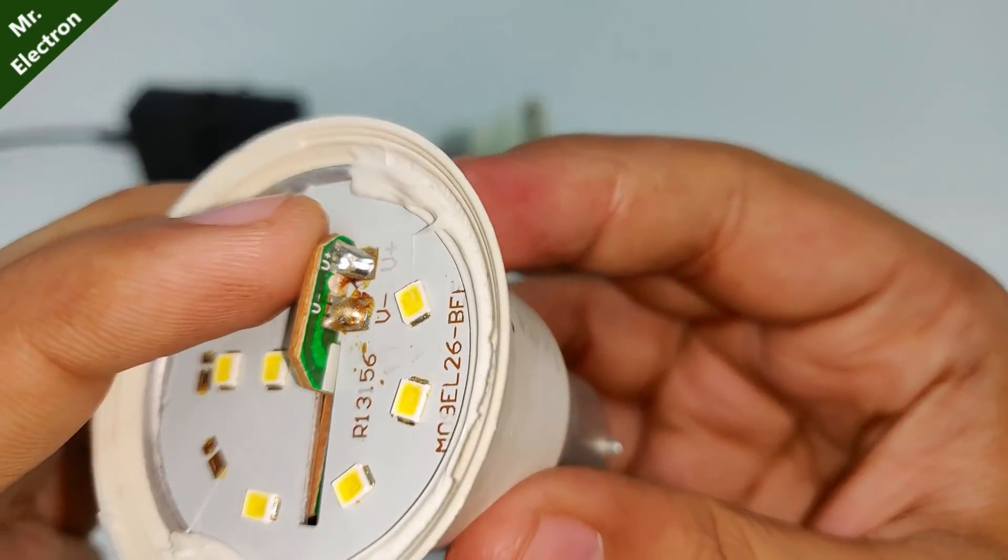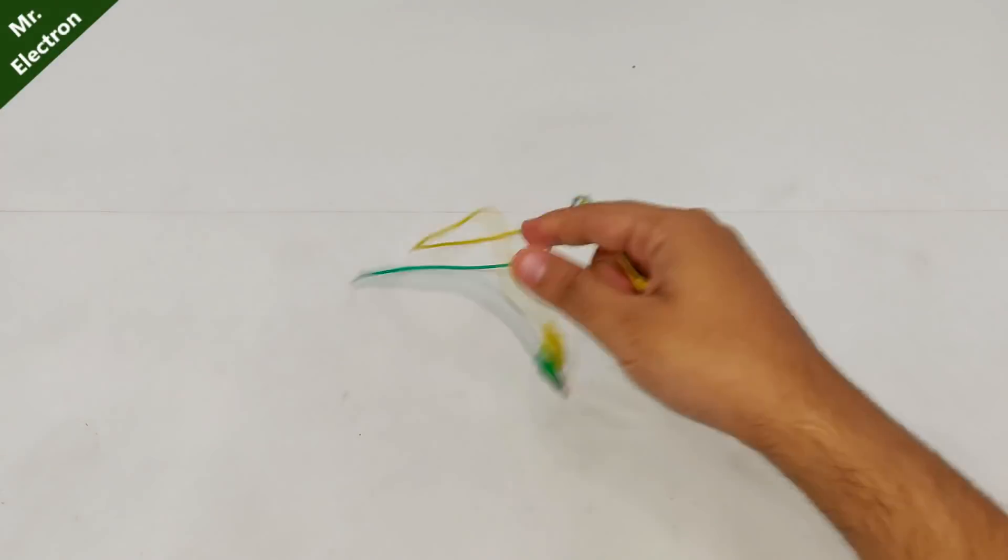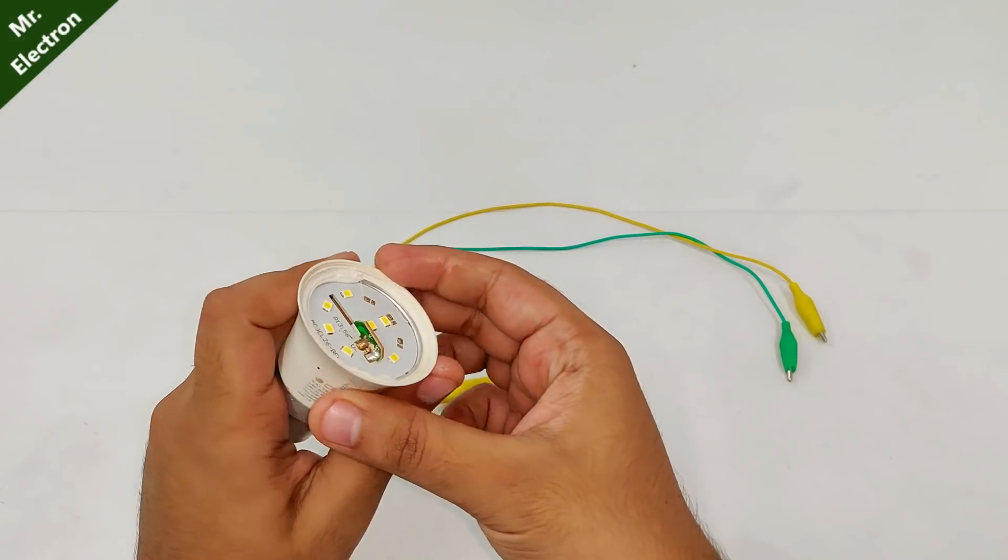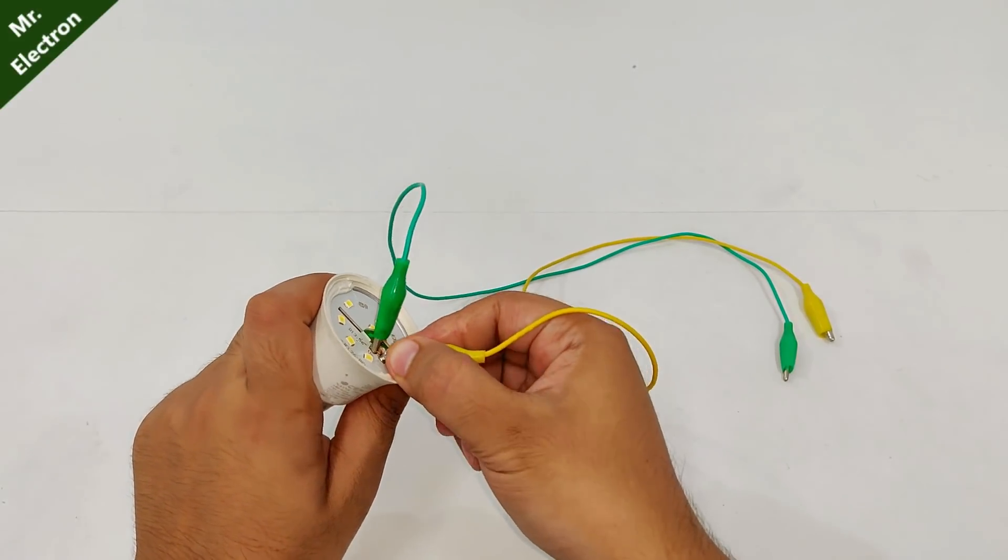Because there are no jumper wires in this one, I will have to figure out another method of doing the test. Take two jumper cables and connect it to the output points of the driver circuit of the LEDs, and then connect the setup to your home socket supply.